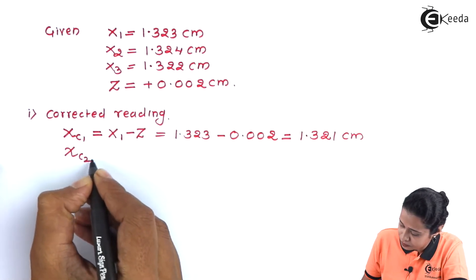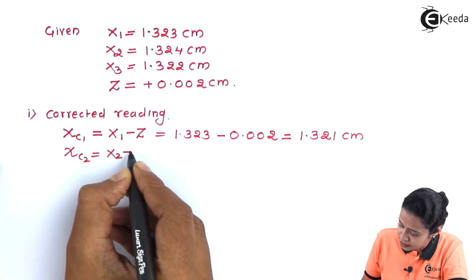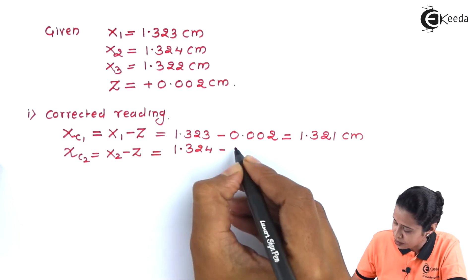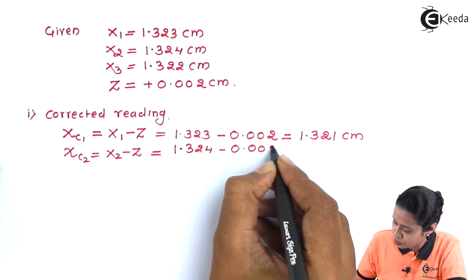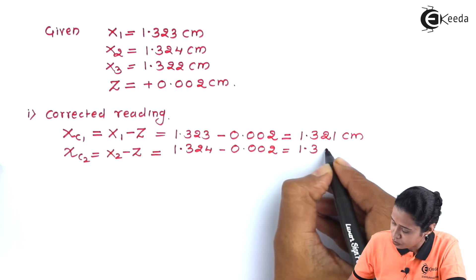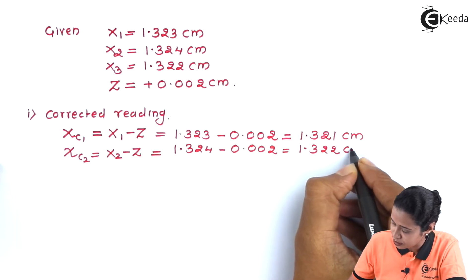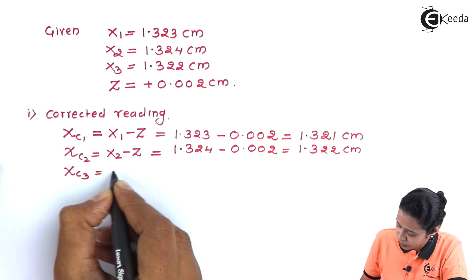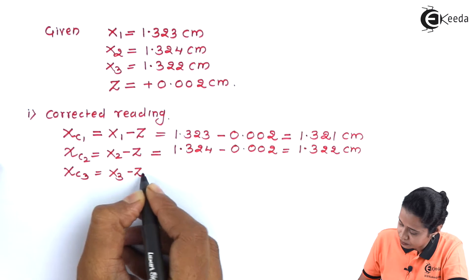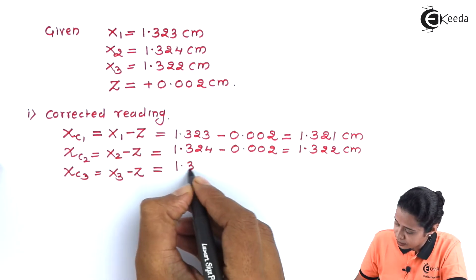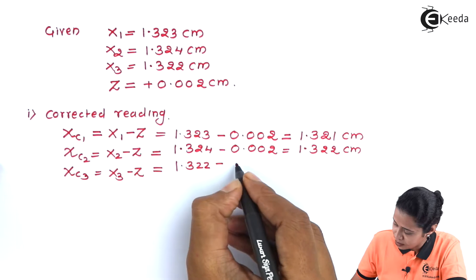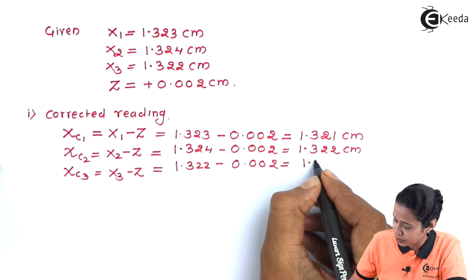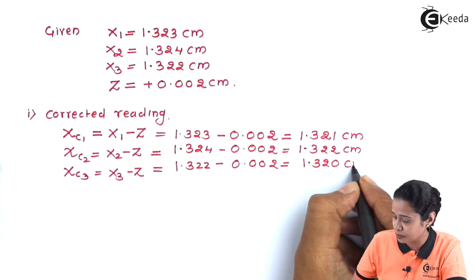Second corrected reading: Xc2 = X2 minus Z = 1.324 minus 0.002 = 1.322 cm. Third corrected reading: Xc3 = X3 minus Z = 1.322 minus 0.002 = 1.320 cm.